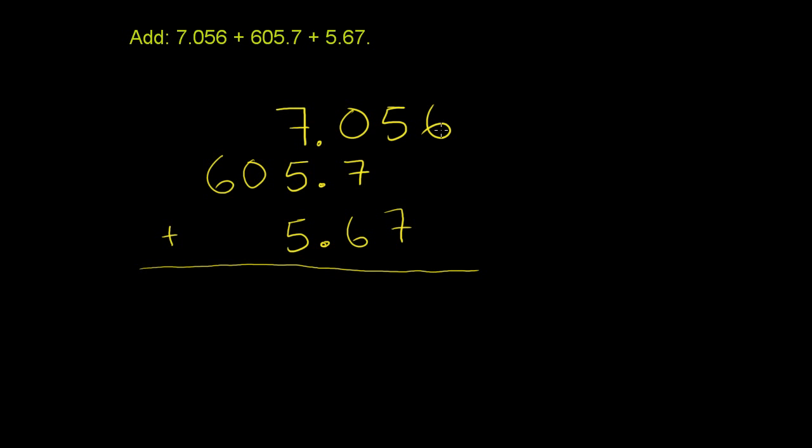This is literally 6 thousandths. And you want to add it to the other thousandths. There aren't any other thousandths. So you can view it two ways. You can just bring this 6 down. Or you could view this 605.7 as the same thing as 605.700. You can add as many zeros to the right of this decimal, to the right of the 7 as you want, since we're sitting on the right side of the decimal, without changing its value.